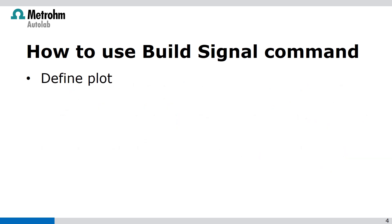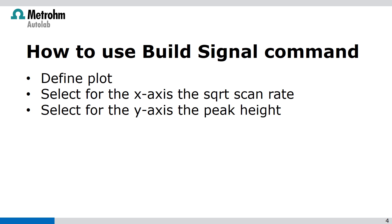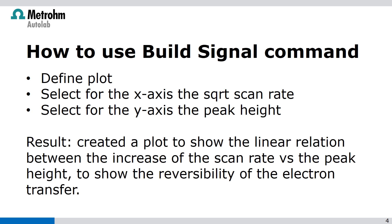Then we have to define a plot, select on the x-axis the square root of the scan rate, and on the y-axis the peak height. Result: we have created a plot to show the linear relation between the increase of the scan rate versus the peak height, to show the reversibility of the electron transfer.